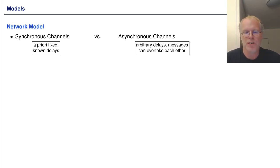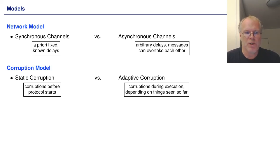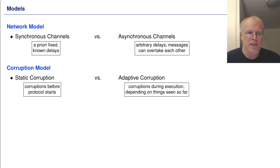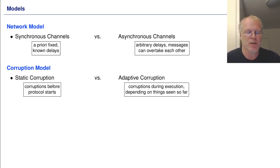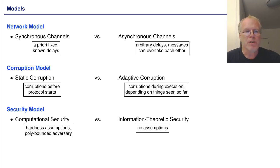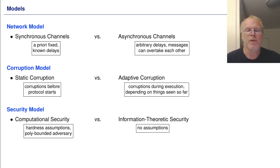The adversary can control the delay of messages. With respect to corruptions, one distinguishes static corruption and adaptive corruption. Static corruption means that all parties are corrupted right at the beginning of the protocol, whereas in adaptive corruption the adversary is allowed to corrupt parties during the protocol execution, choosing parties to corrupt depending on information gathered so far. With respect to security, one distinguishes computational security and information theoretic security, where computational security is based on some hardness assumption and the adversary is assumed to be polynomially bounded, whereas in information theoretic security, the security holds without any assumption.